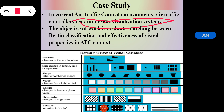Consequently, the air traffic control activity may strongly load the cognitive system. The objective of the work is to evaluate the matching between Bertin's classification and the effectiveness of visual properties in the ATC context.